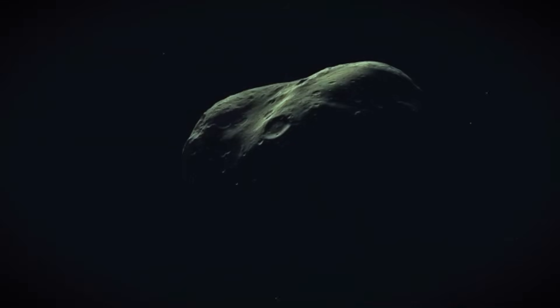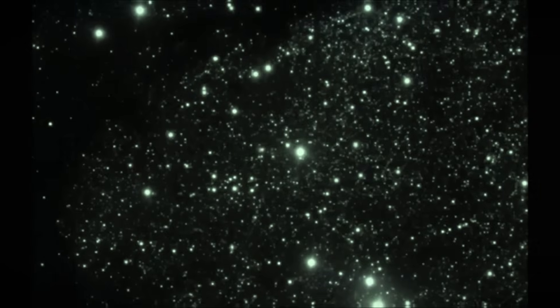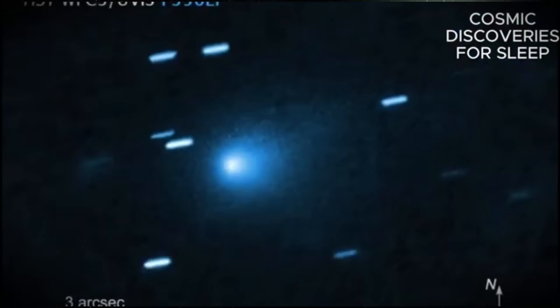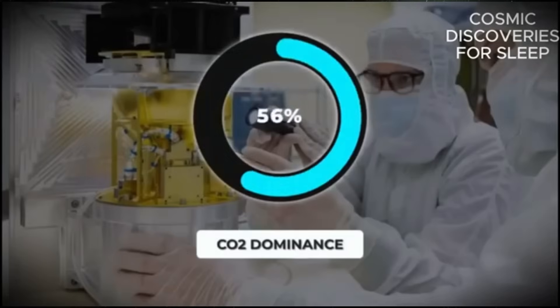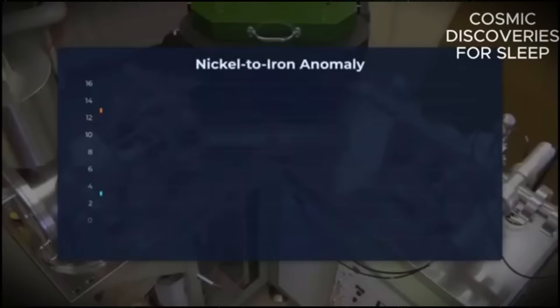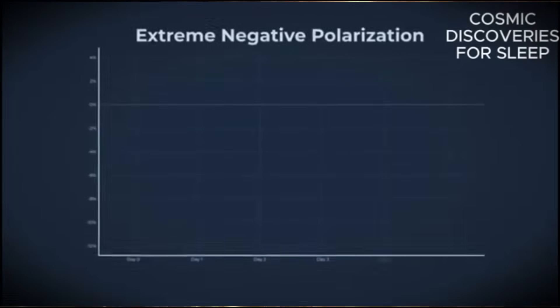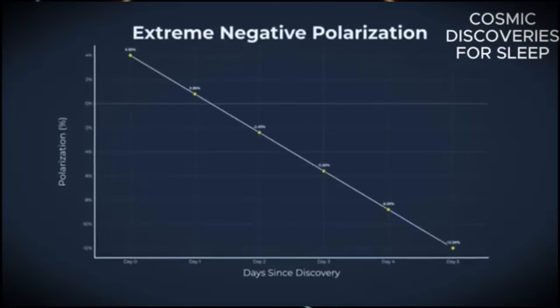Seventh anomaly: impossible polarized light. Atlas showed a light polarization pattern never seen in any known natural object. Polarization is like light's fingerprint. Each type of surface creates a unique pattern. It's as if Atlas had a fingerprint that doesn't exist in any file in nature, including all comets ever studied, even Borisov.